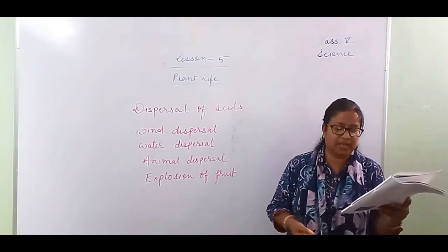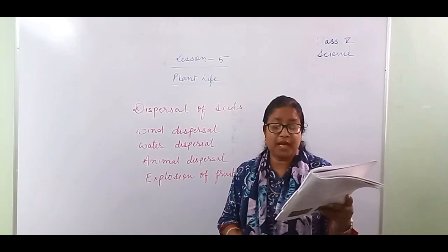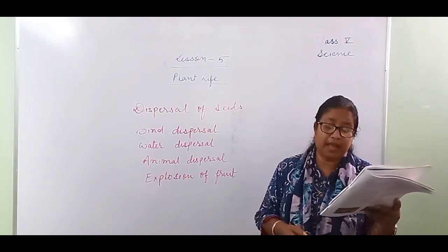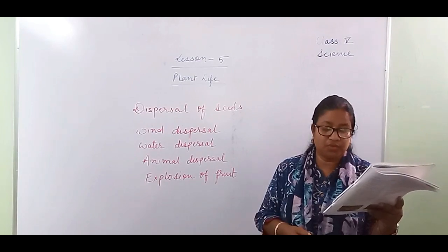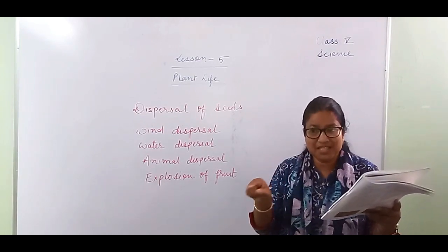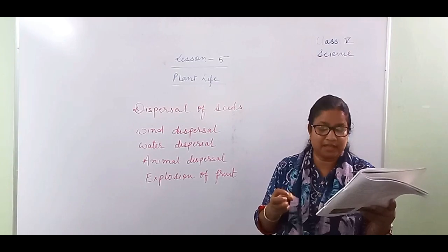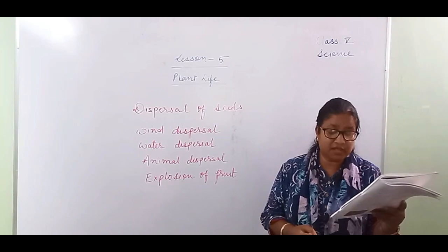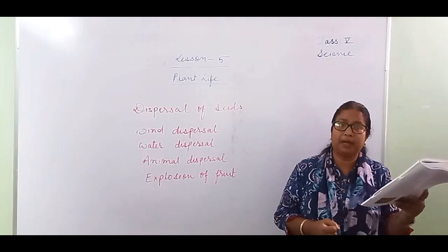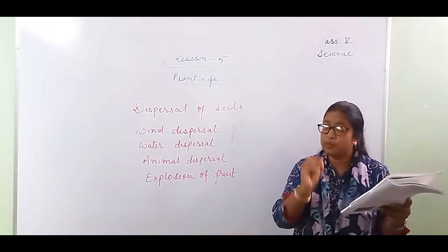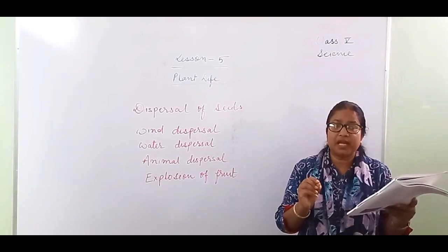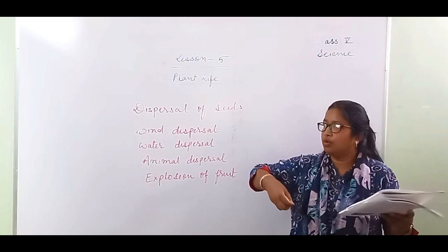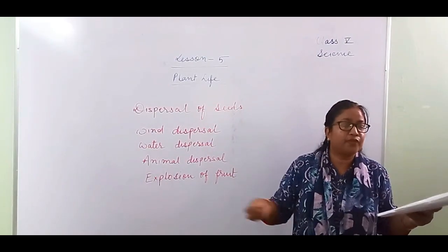Explosion dispersal: fruits of plants such as balsam, pea, geranium, and touch-me-not burst open or explode when they are dry, scattering the seeds away from the parent plant. After drying, they explode forcefully and the seeds are thrown far away from the parent plant.